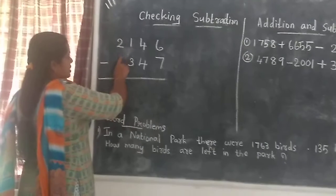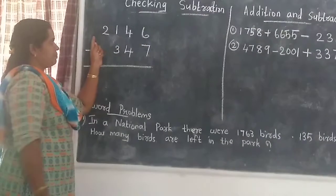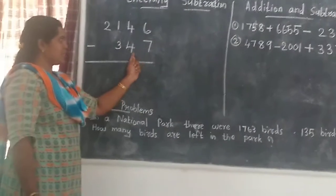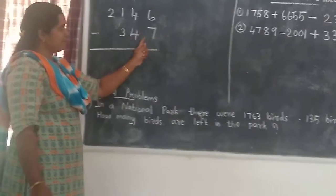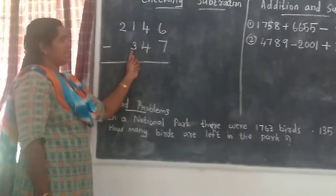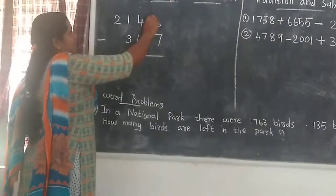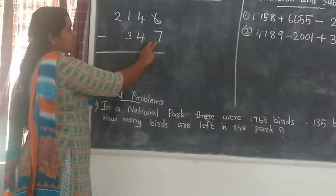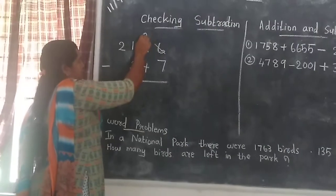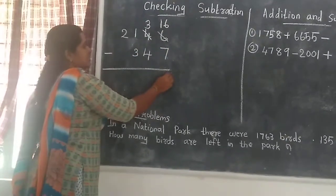First we have to subtract 347 from 2146. Listen carefully. This is a 4-digit number and this is a 3-digit number, so we should arrange the numbers from right to left. We start the subtraction from the ones place: 6 minus 7. We cannot subtract 7 from 6, so we take 1 from the 4 in the tens place. This 4 becomes 3 and this becomes 16. 16 minus 7 is 9.